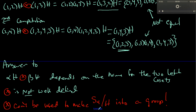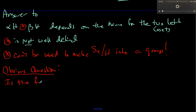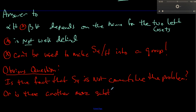That's different from what we had in the previous video. One obvious question is: is the fact that S4 is not commutative the problem, or is there some other more subtle issue? We will explore that question in the next couple of videos.